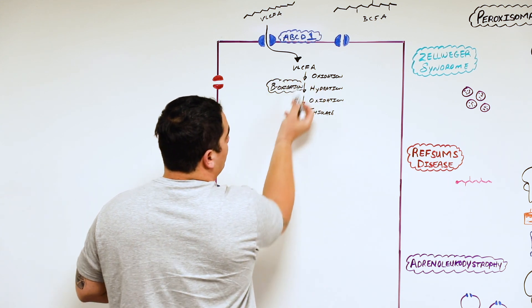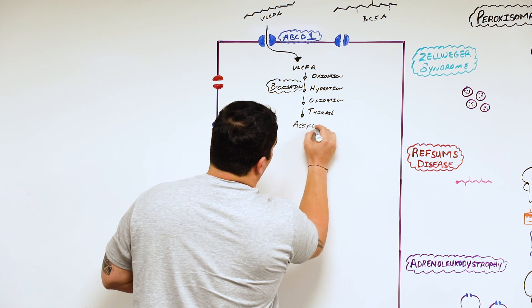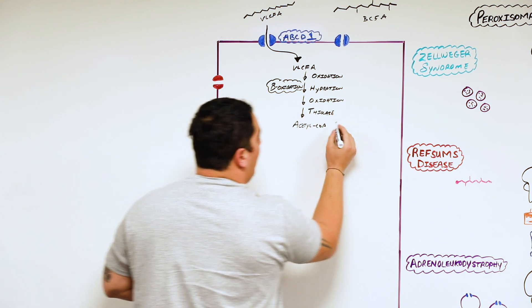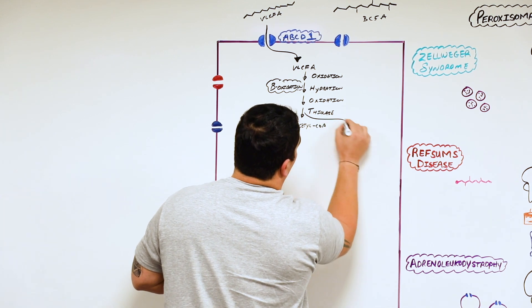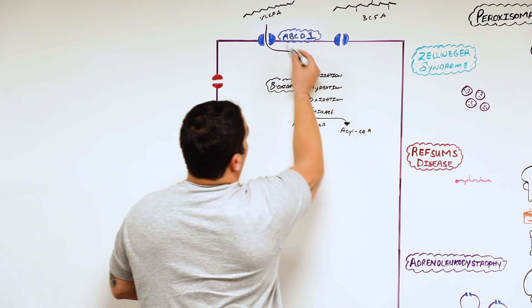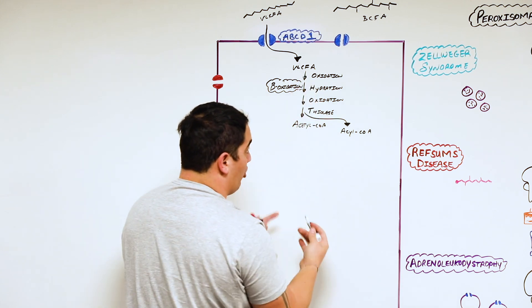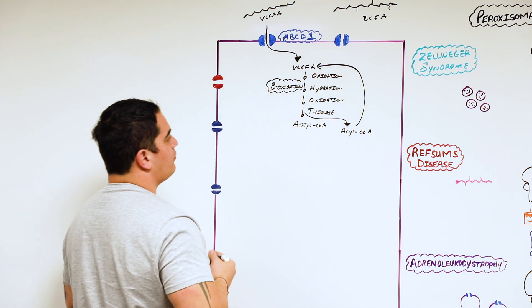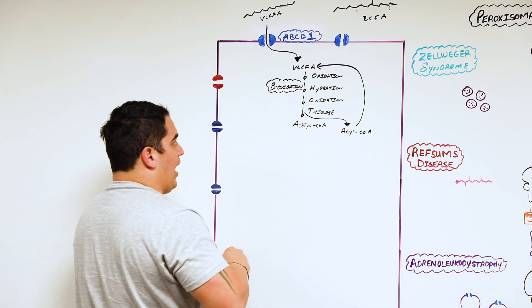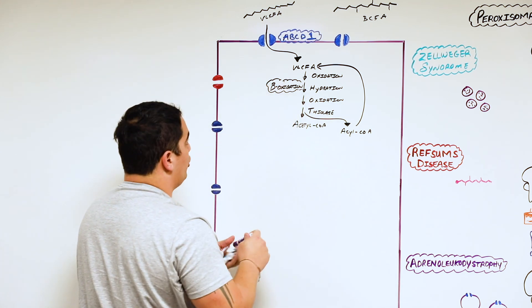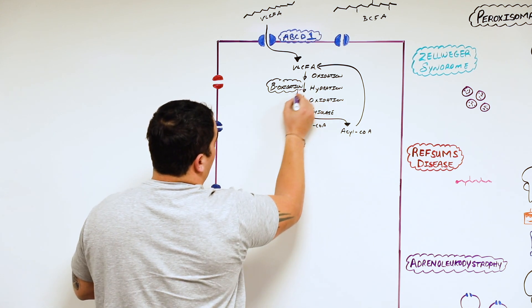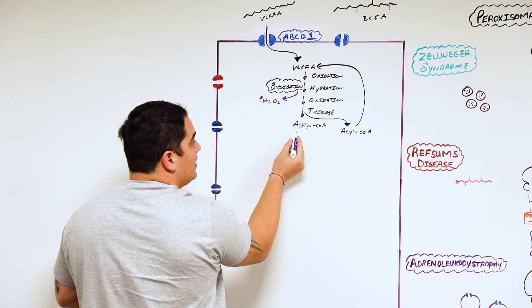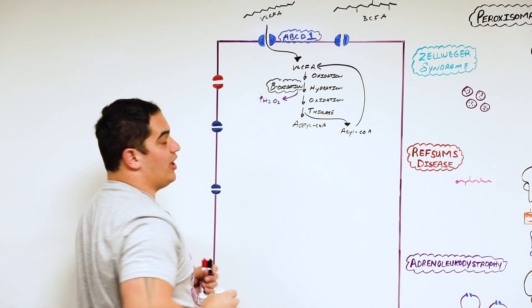At the end result of this beta oxidation pathway, you generate acetyl-CoAs. You're taking these fatty acids and chopping off two carbons at a time, generating acetyl-CoA molecules. During this process, a particular molecule is generated from the oxidation step: hydrogen peroxide. The more very long chain fatty acids that get beta oxidized, the more hydrogen peroxide you generate.